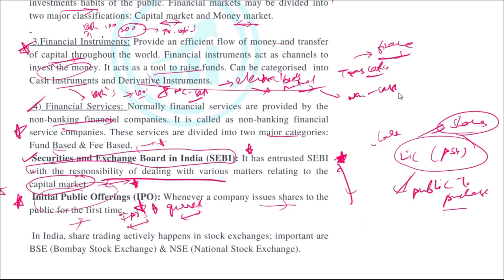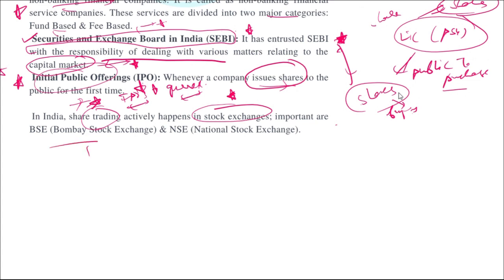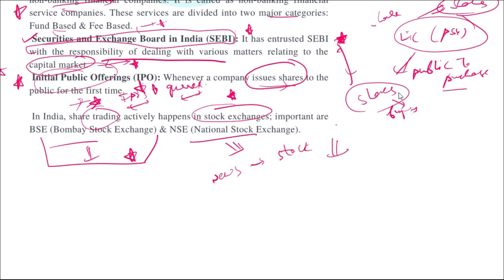When a company issues shares through an IPO, those shares are traded in stock exchanges. The process of buying and selling shares is called share trading, and it actively happens in stock exchanges. In India, there are primarily two important stock exchanges: the Bombay Stock Exchange (BSE) and the National Stock Exchange (NSE). When the news says the stock market has gone high or low, they are referring to these exchanges.